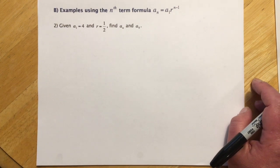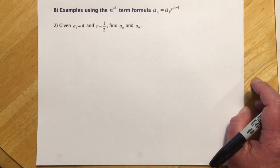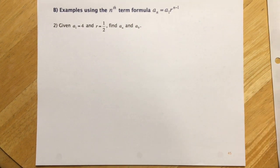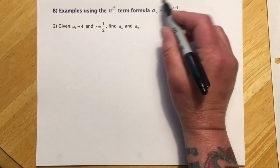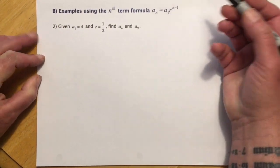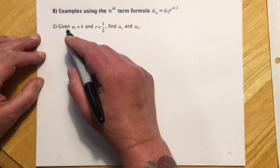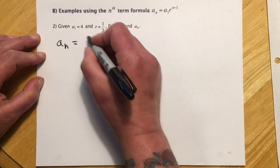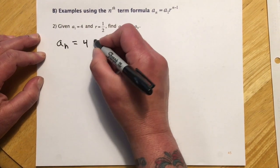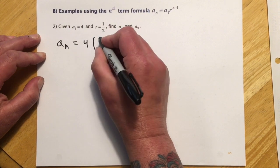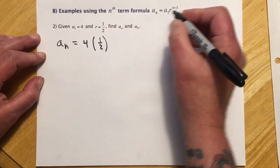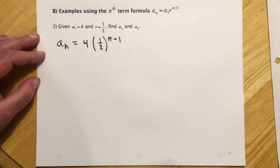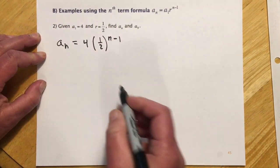So example 2, given a sub 1 is 4 and the ratio is 1 half, find the nth term and the 9th term. So very much like the example we did back in 11.2, but now we're using this other formula, because it's geometric. So the nth term formula is going to be a sub n equals the first term a sub 1 times the ratio 1 half to the n minus 1. And this is nth term, so I'm just leaving it as n minus 1. And then I can use this now to find any term.